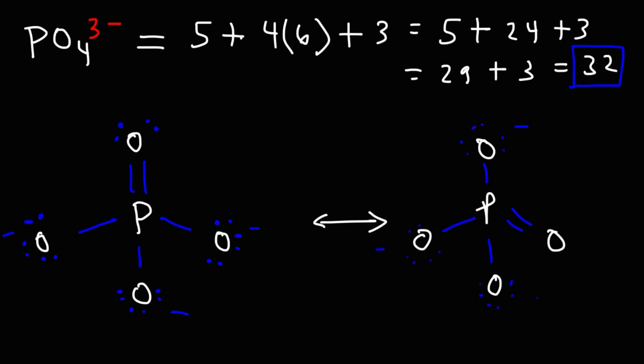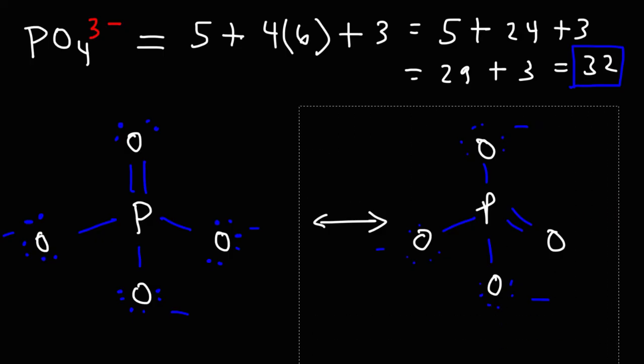These two resonance structures are, for the most part, identical in energy. They're the same. Now, phosphate has resonance structures that are not the same. For instance, we could break a pi bond and move those two electrons to this oxygen atom. If we do that, we're going to get this structure.